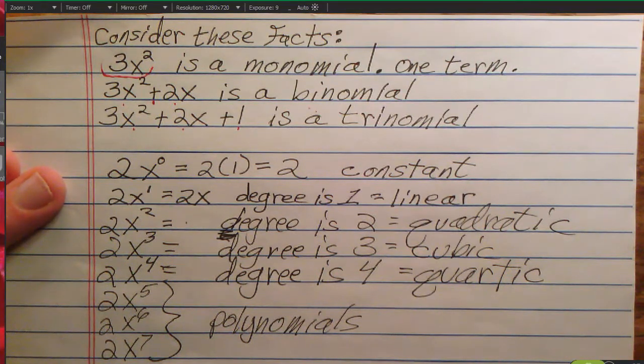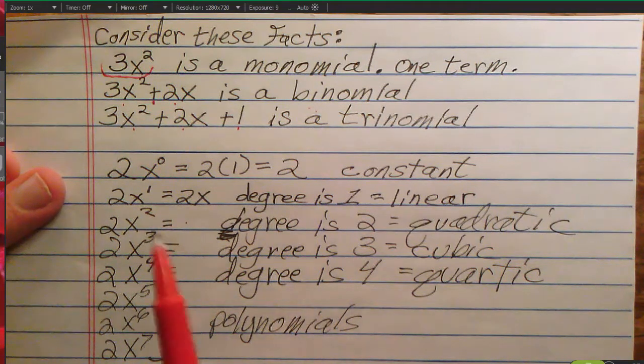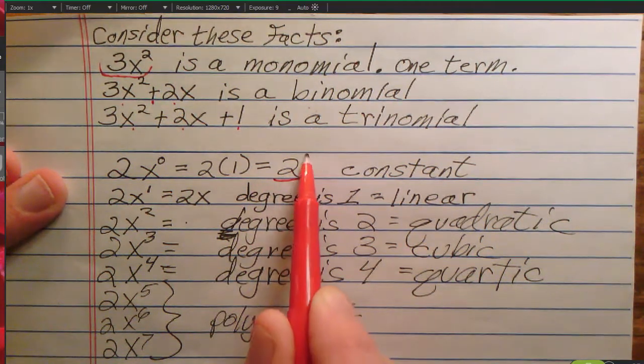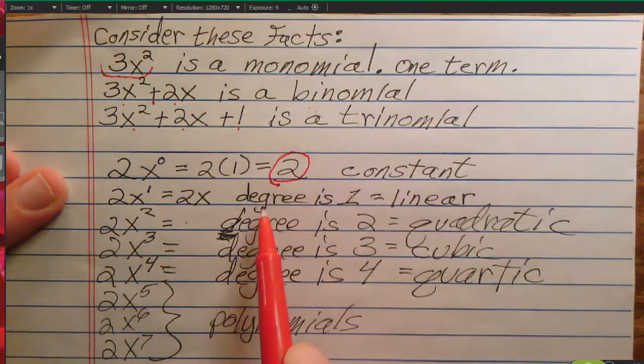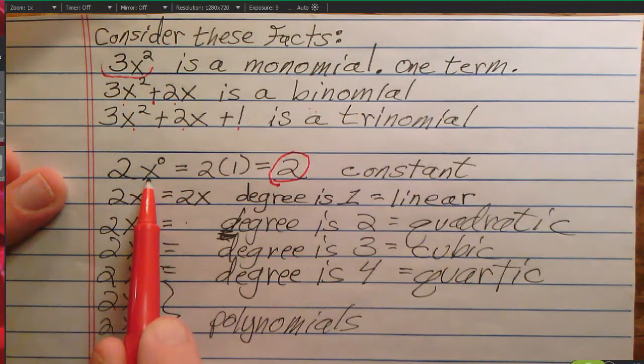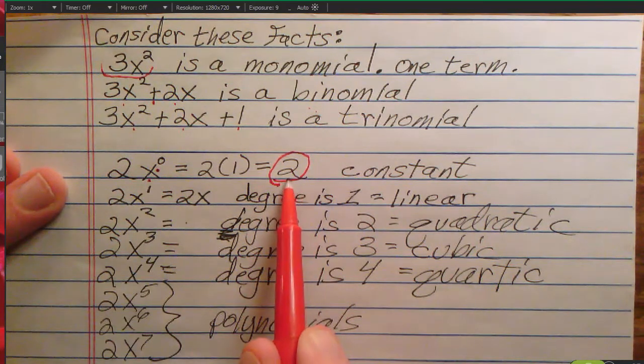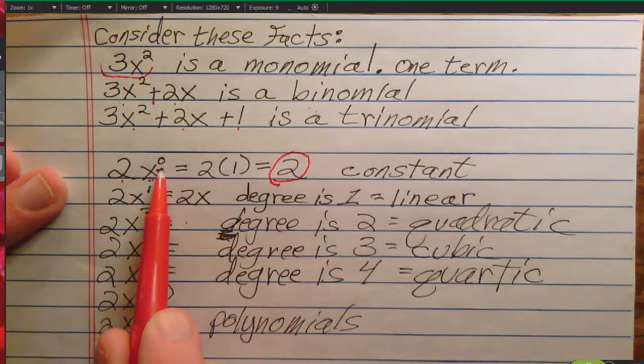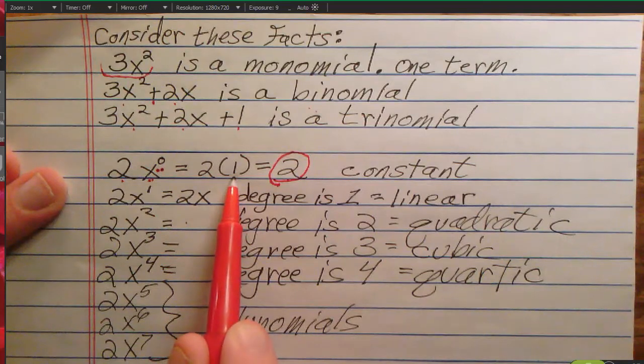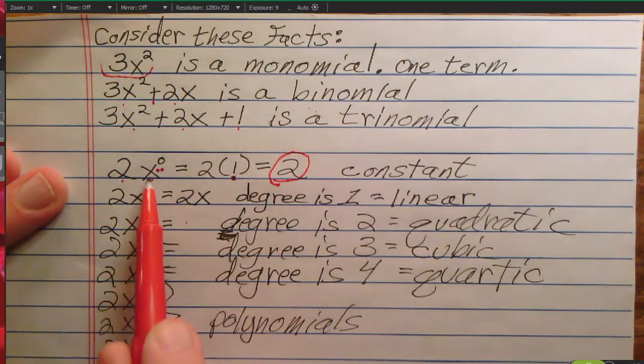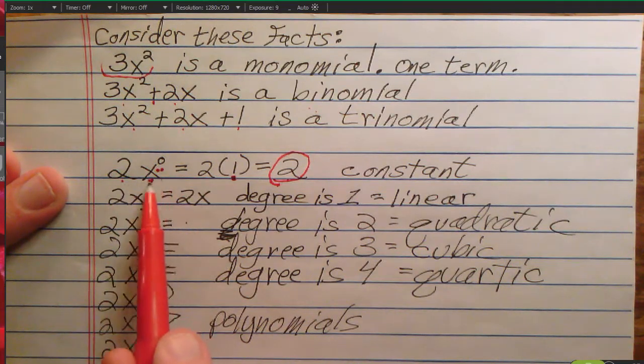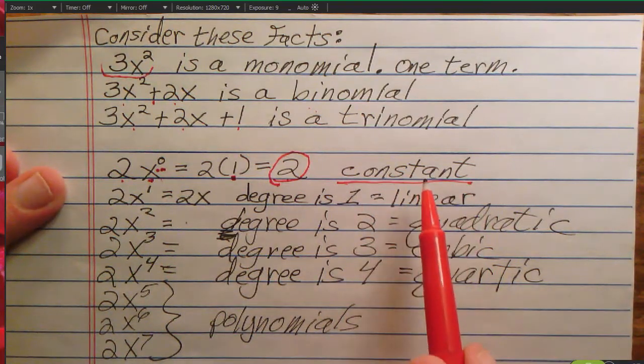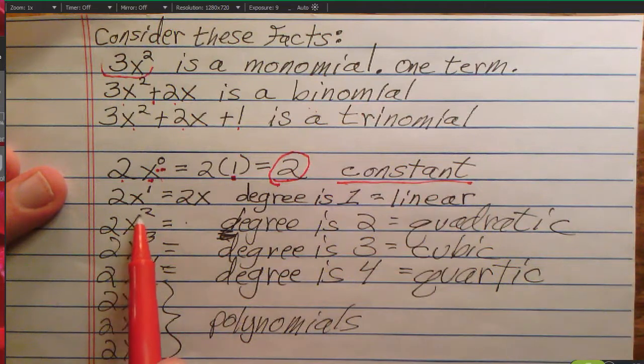Now, let's talk about the name of degrees. First, here might be a surprise. Plain numbers that we call constants are actually coefficients of variables to the zero power. So, this two can also be written as two times x to the zero power, because anything to the zero power is just one. Any term whose degree is zero is called a constant. Constants all have degree zero.